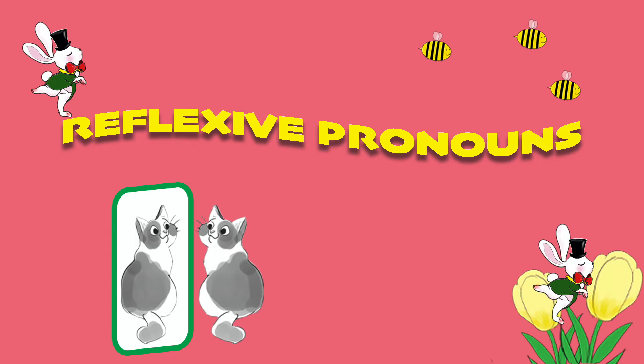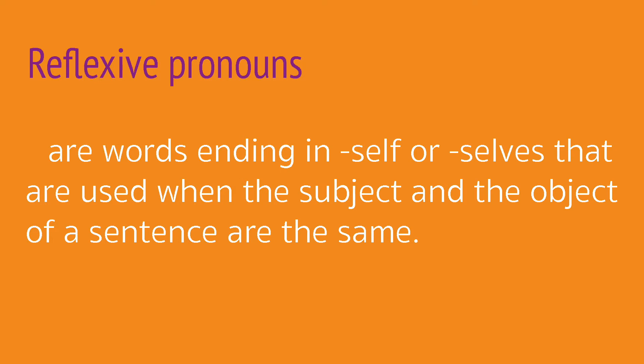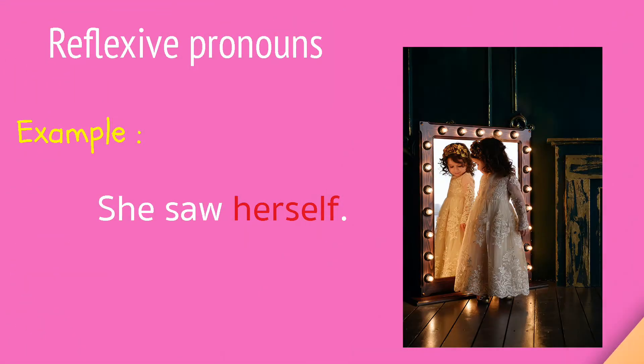Reflexive pronouns are words ending in 'self' or 'selves' that are used when the subject and the object of a sentence are the same. Here is an example of a reflexive pronoun: 'She saw herself.' Herself is the reflexive pronoun.